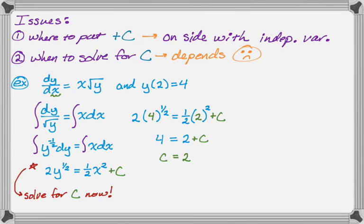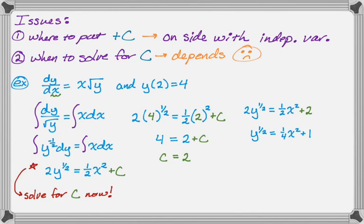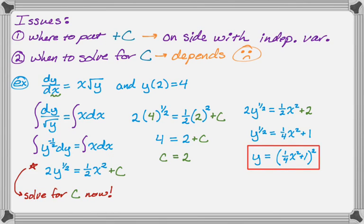Going back to that step and replacing C with 2: 2y to the 1/2 equals 1/2 x squared plus 2. The solution to a differential equation is a function, so I need to solve for y. Divide through by 2: y to the 1/2 equals 1/4 x squared plus 1. Then square both sides: y equals the quantity (1/4 x squared + 1) squared. It's a continuous function, so there are no issues.